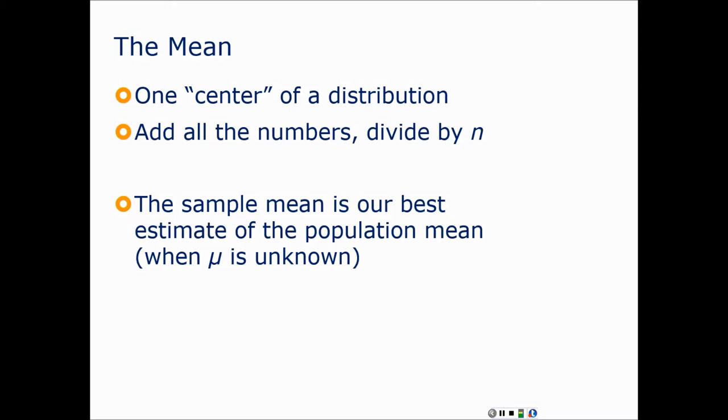Now, often when we take a mean, we're trying to figure out what the population mean is from a sample. So mu is the symbol for the population. When we don't know the population mean, we say that the sample mean is our best guess as to what that is. Now when you say add all the numbers together, you can say capital sigma x. So sigma x over n is the formula for the mean.